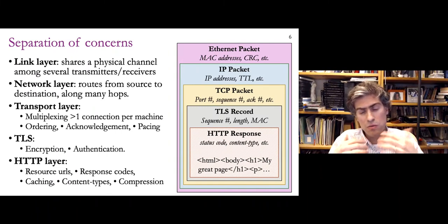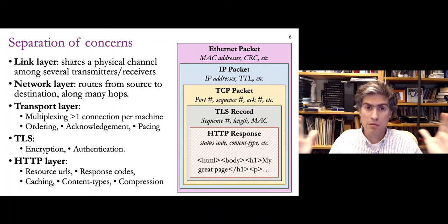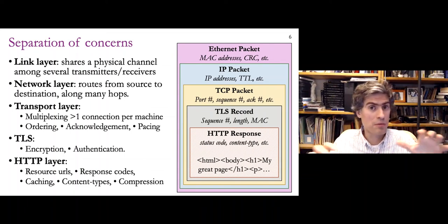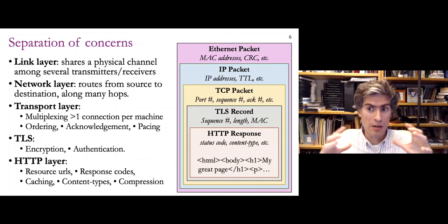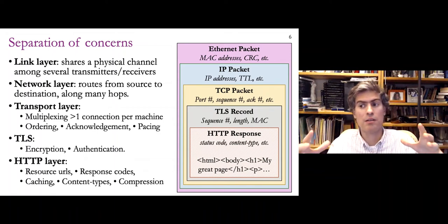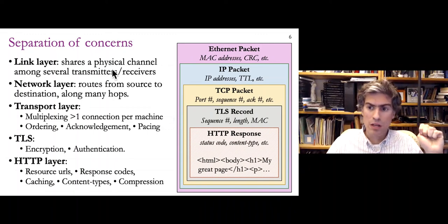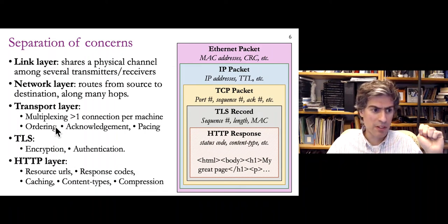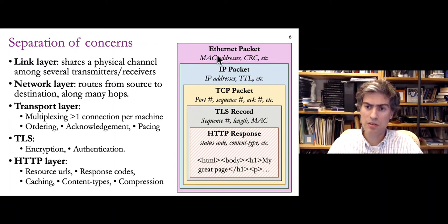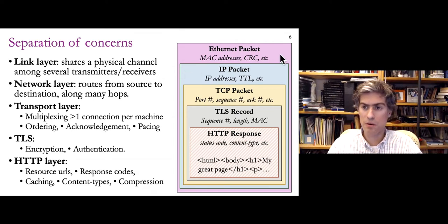We also have separation of concerns — a general software engineering principle — where if we want to do something complex, we break it into pieces, solve those sub-problems separately, and bring it together into a solution. We have multiple layers of protocols, starting with HTTP at the top and moving down to the link layer. The link layer — most frequently illustrated by Ethernet — allows sharing a physical channel with multiple transmitters and receivers. We also talked about wireless media access control protocols like Bluetooth and Wi-Fi.